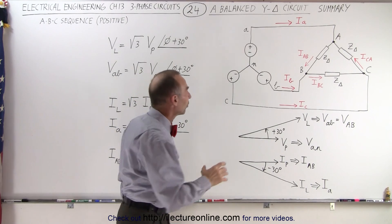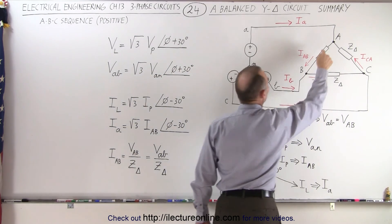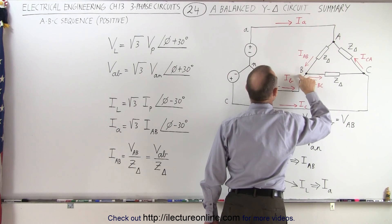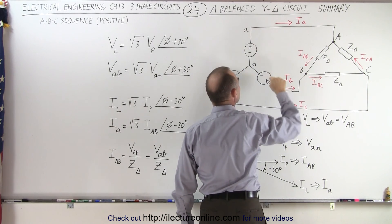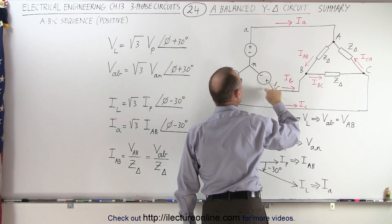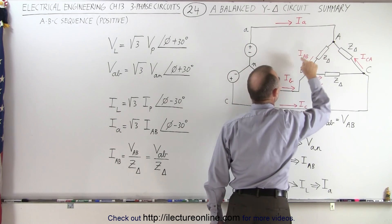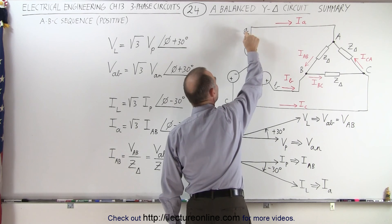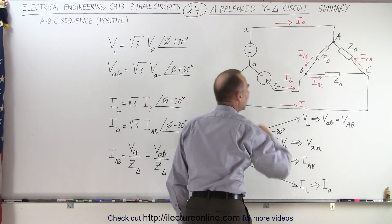For voltages, the line voltage is the voltage across from A to B, which is also the voltage across from A to B at the source. So V lowercase AB is the same as V uppercase AB. The phase voltage is the voltage between A and N, B and N, and C and N.